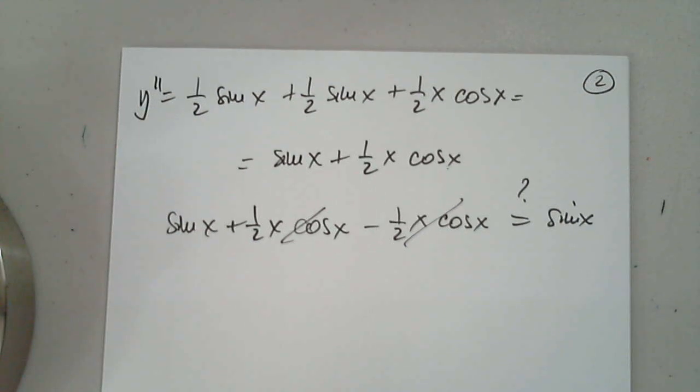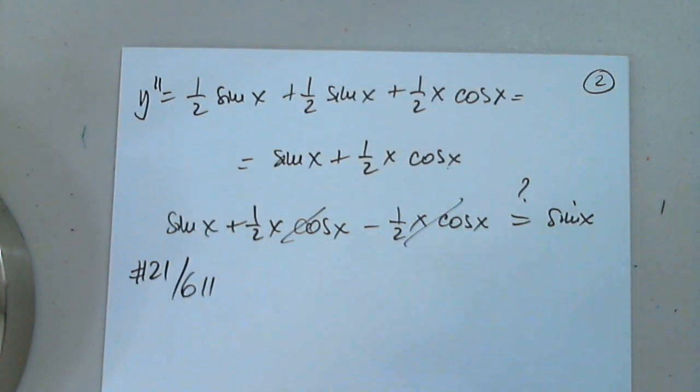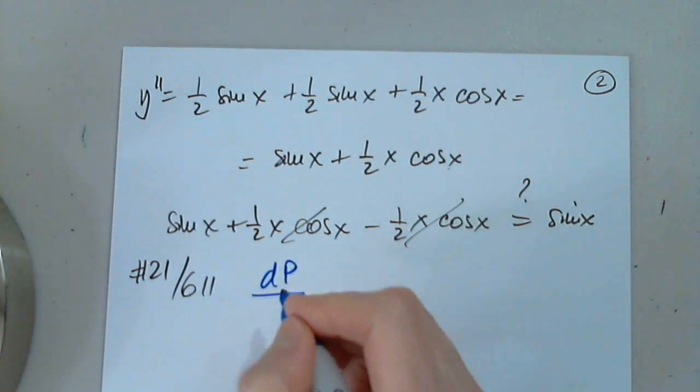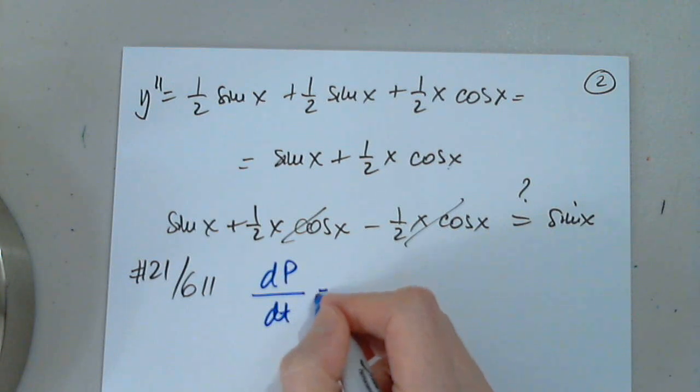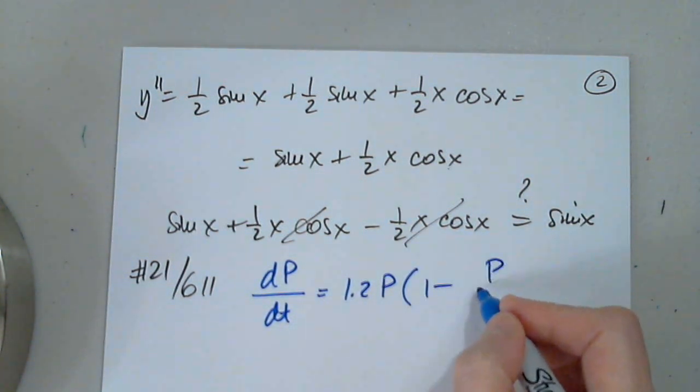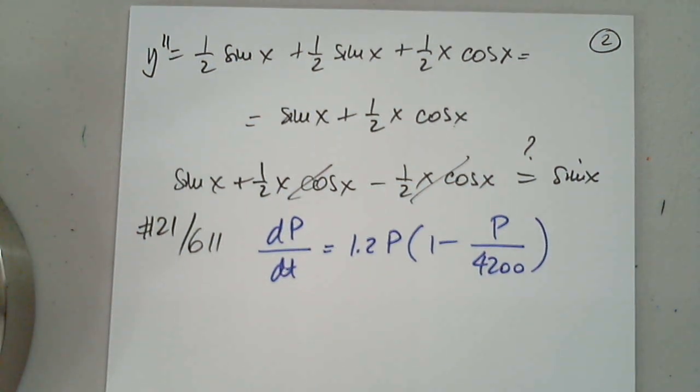Let's also look at one more here, number 21, on the same page, 611. And in number 21 we are given a population is modeled by the differential equation. So, DP over DT equals 1.2 P, 1 minus P over 4200. Here we have a few parts.